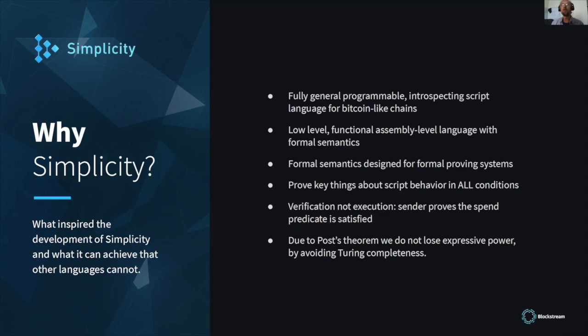What's different about Simplicity is it has formal semantics, which help proof assistants to prove things about programs, in particular the security assumptions. Due to Rice's theorem, which is a kind of computer science concept, Simplicity is not Turing complete. However, it provides full expressive power because it's based on verification, not execution.